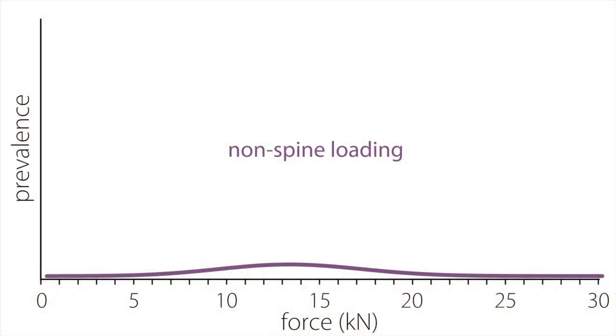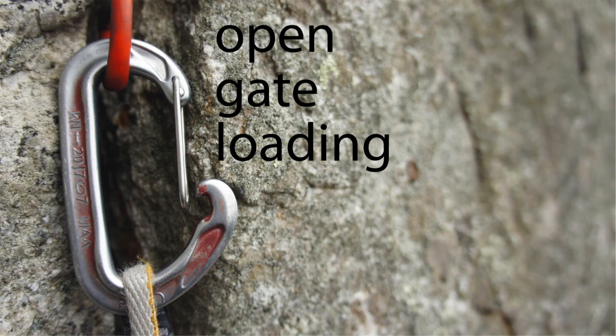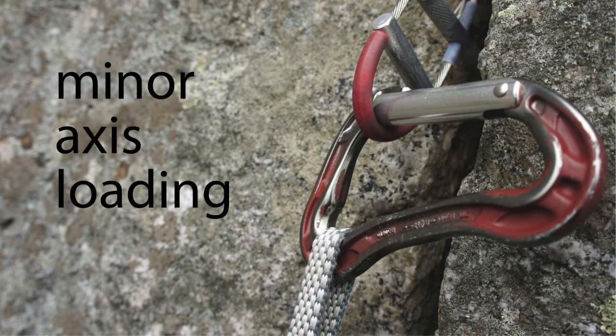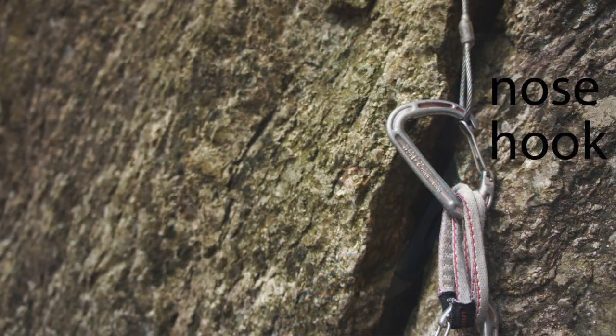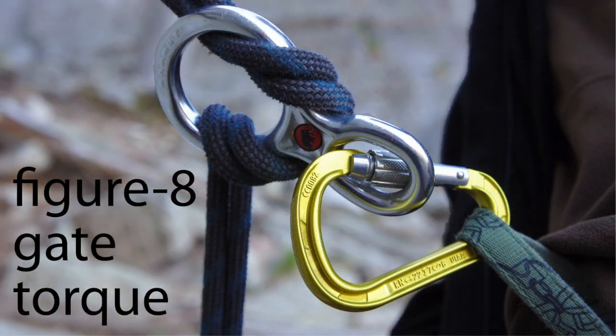The remaining contribution to the strength distribution is a hodgepodge of different ways that carabiners can be loaded, all of which are not along the spine. Examples of such loading include open gate loading, minor axis loading, out of plane loading, multipoint loading, nose hook, and figure eight gate torque.